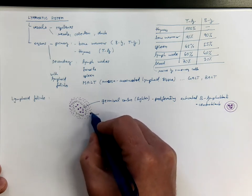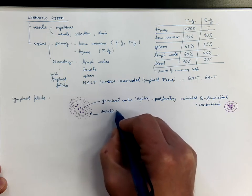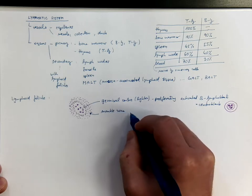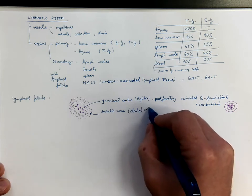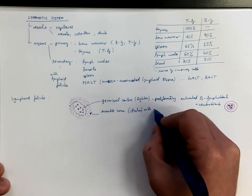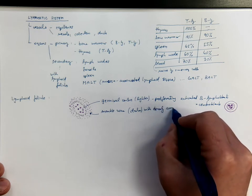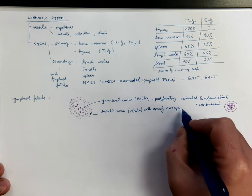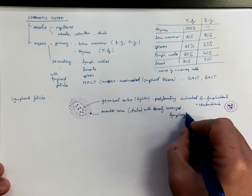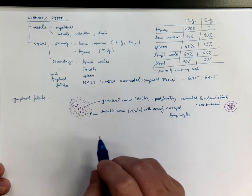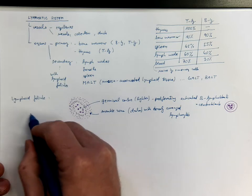The outer, darker zone is the mantle zone. It's darker with densely arranged lymphocytes. So, except B lymphocytes, which cells can be found in the lymphoid follicles?